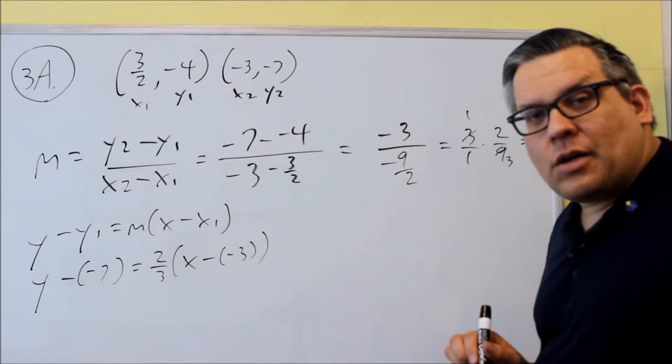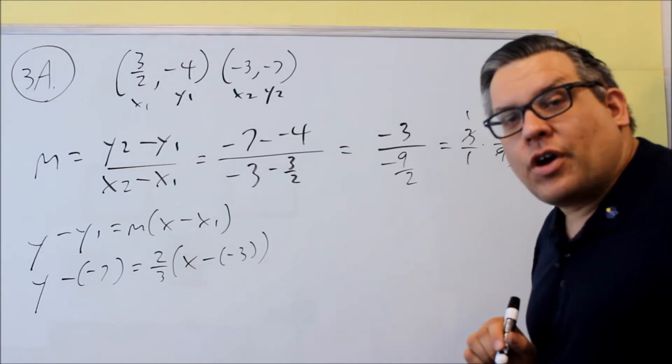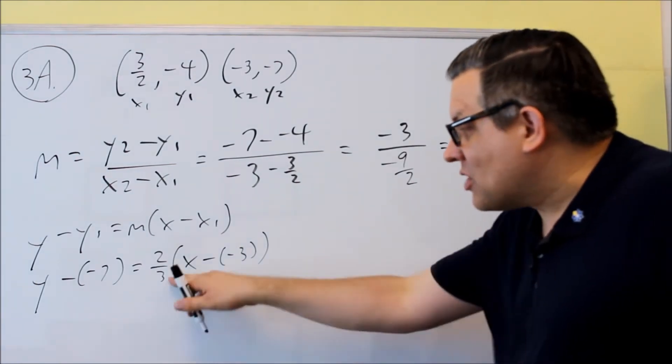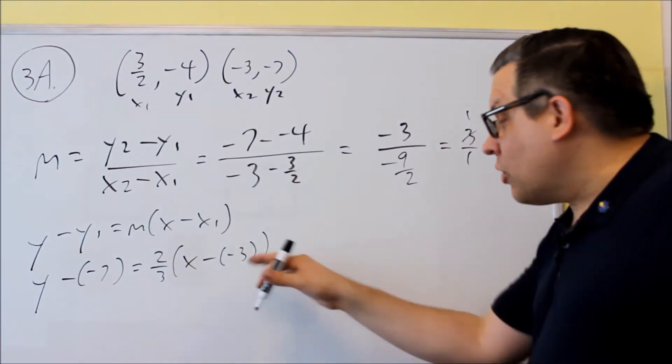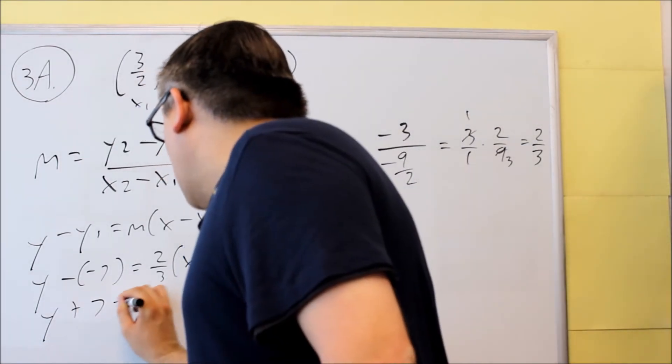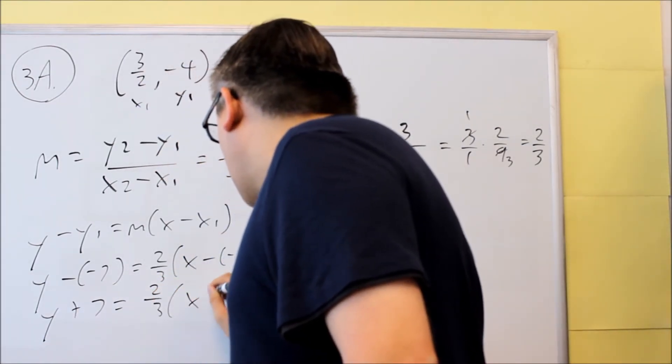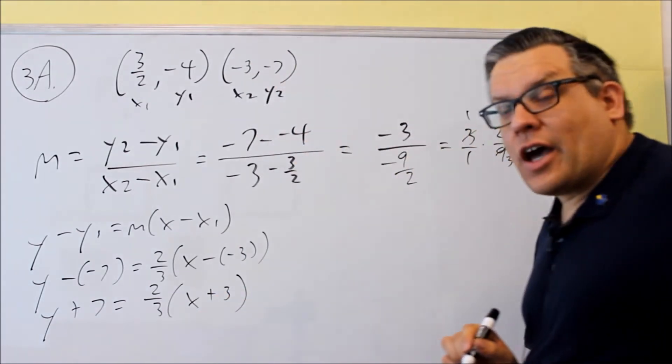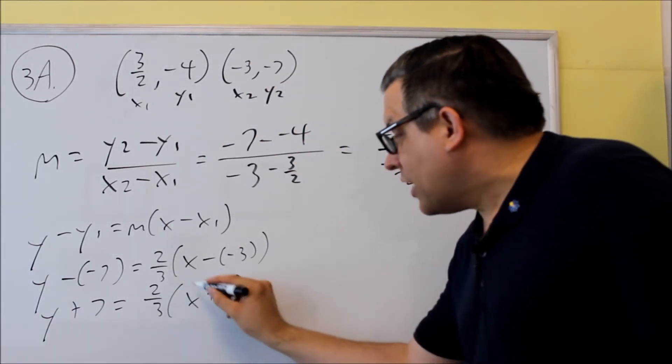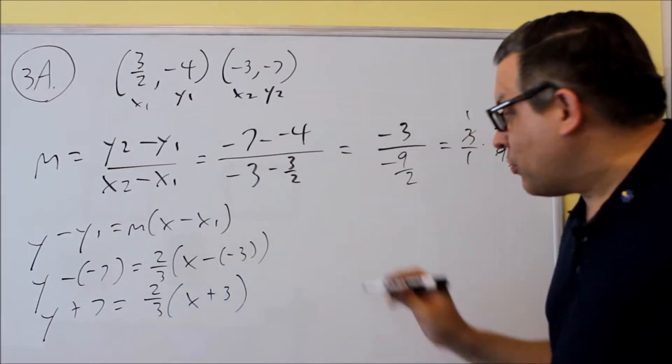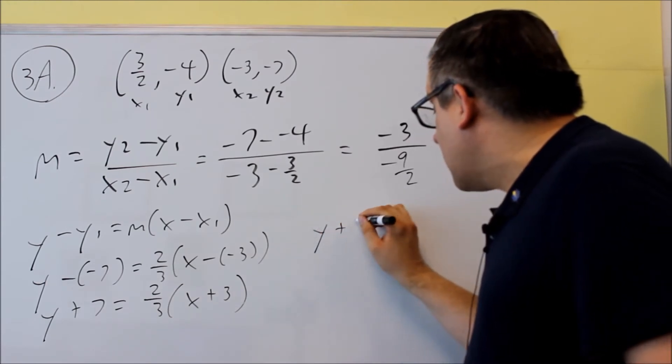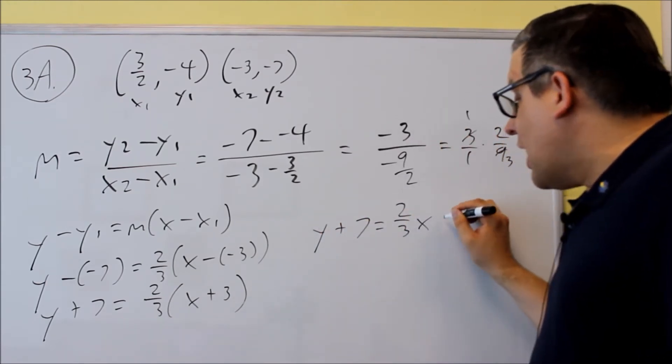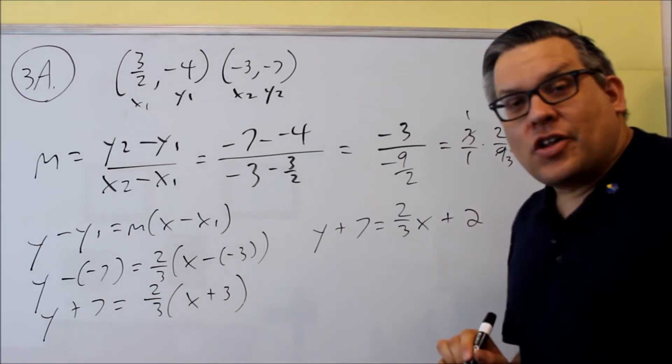We need to solve this for y because the instructions say to write the equation in slope-intercept form. This is not in slope-intercept form. We want to simplify it. We get y plus 7 equals 2 thirds x plus 3. When we simplify that, we're going to multiply the 2 thirds into the parentheses. So we get y plus 7 is going to equal 2 thirds x plus 2.